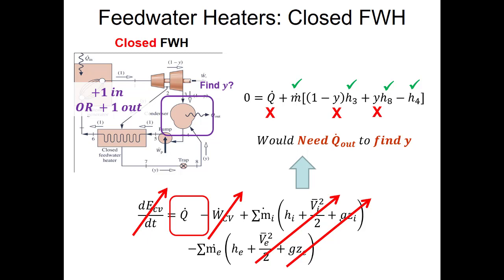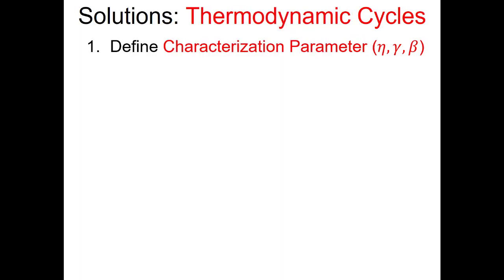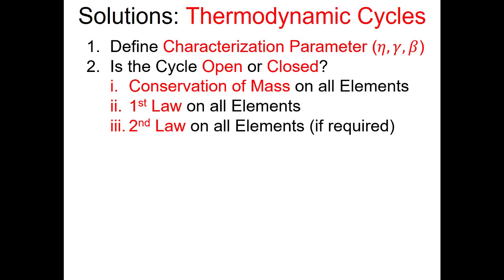Thinking more generally about thermodynamic cycles, we can approach all of them with the same framework. First, define a characterization parameter — energy benefit divided by energy cost. The name changes: eta (thermal efficiency) for heat engines, beta (COP) for refrigerators, and gamma (COP) for heat pumps. Then ask whether we model the processes as open or closed systems, which tells us which version of the first and second laws to use.